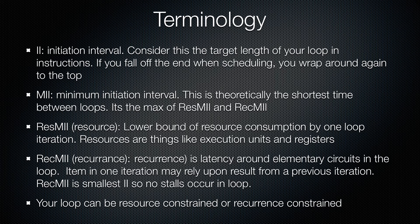Some terminology — I'm going to focus on the first two because they're the most important. The initiation interval is probably the single most important thing in scheduling. It's the target length of your loop in instructions or slots that you have to schedule. If you fall off the end of it, you wrap around to the beginning and look for the first open slot. Things that wrap around and find a slot to schedule in become things that are considered next iteration. The MII, or minimum initiation interval, is theoretically the shortest time you can have between loops — it's the maximum of the resource MII and the recurrence MII. I'd rather just show you a trick I use for finding this — I didn't invent it, this is totally common.